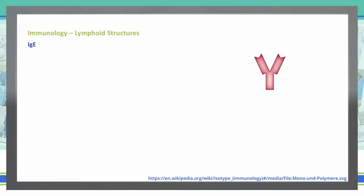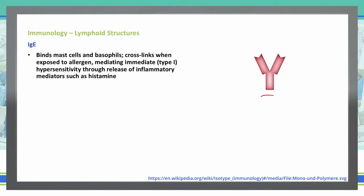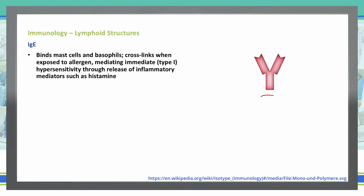Finally, we have IgE. IgE is a monomer. It binds the mast cells and the basophils. Sometimes it will cross-link when exposed to allergens, specifically mediating the immediate type 1 hypersensitivity through the release of inflammatory mediators like histamine. It also contributes to immunity to parasites by activating eosinophils. So we deal with allergies and parasites with IgE.